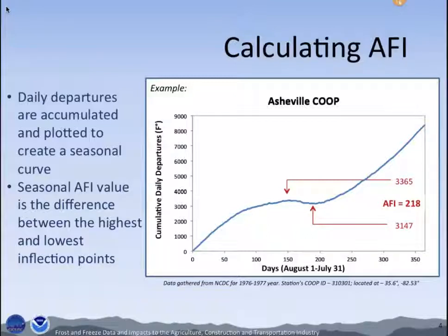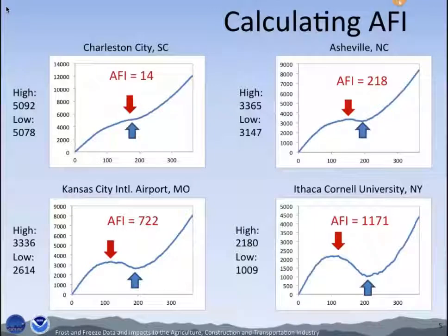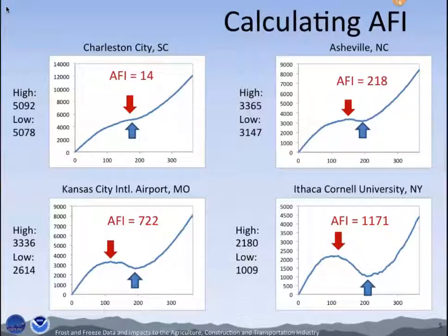To provide a comparison, I wanted to display Asheville alongside a few other locations that some of our attendees are from. In the top right corner you have the Asheville value of 218. You can see the comparison of seasonal curves between different areas: Charleston, South Carolina has an AFI value of 14; Kansas City, Missouri has an AFI value of 722; and Ithaca, New York has an AFI value of 1,171.